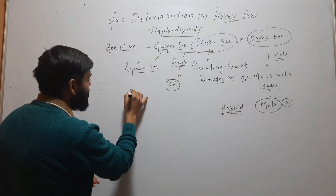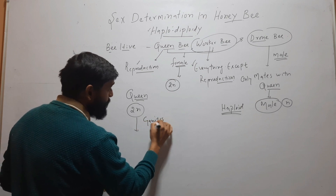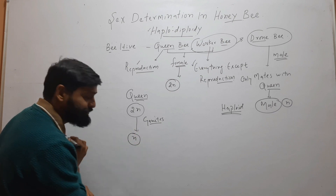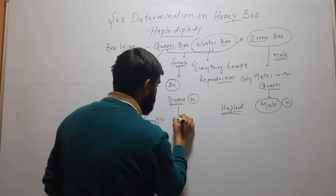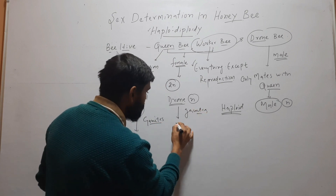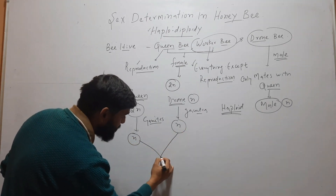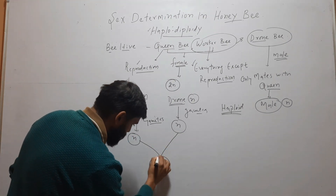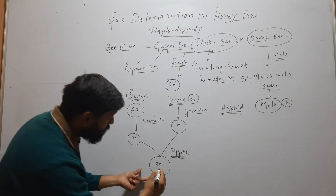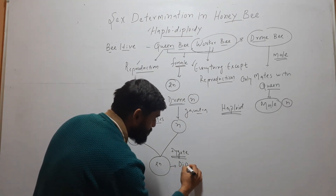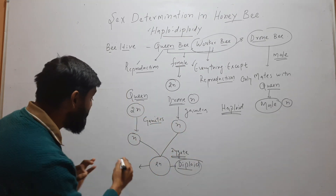Suppose we have a queen and the queen is 2N. It will produce gametes by meiosis, and those gametes will be haploid. The drone is also haploid, so its gamete will also be haploid. When the gamete of the queen bee is fertilized by the gamete of the drone, there will be a 2N zygote. This diploid zygote will be female.